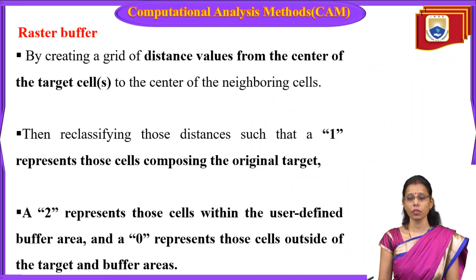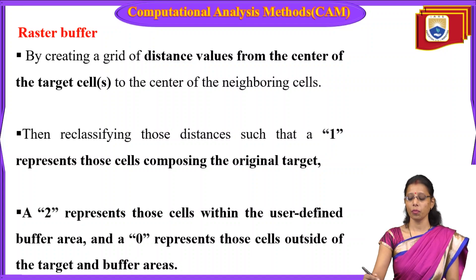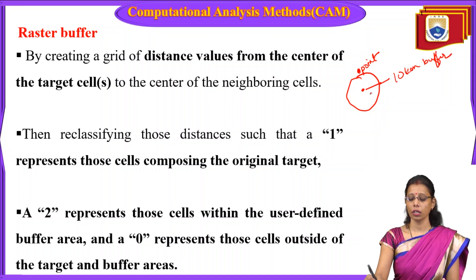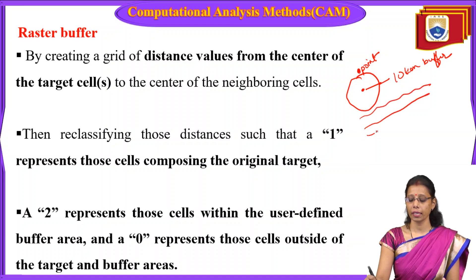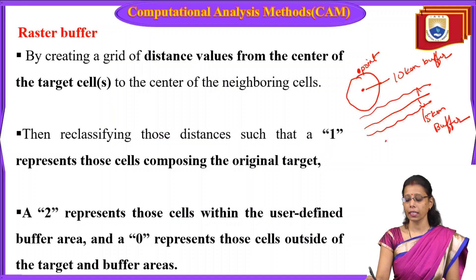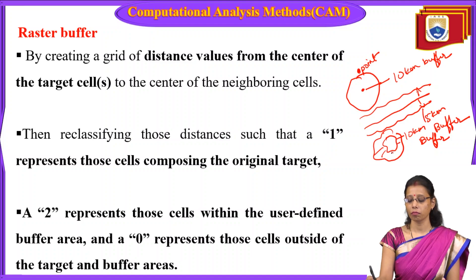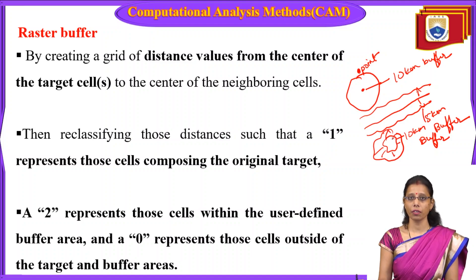Now, raster buffer. You may remember from the vector data analysis: for a point, you create a buffer of, say, 10 kilometers around it. For a line, a buffer of around 5 kilometers is created on both sides. Similarly for a polygon, a 10 kilometers buffer zone is created around it. When talking about raster buffer, it deals with pixels.